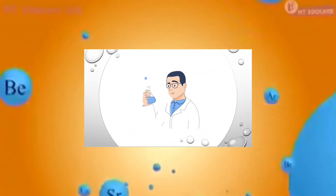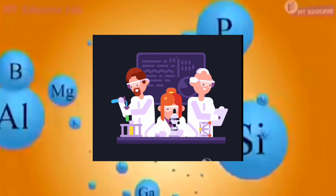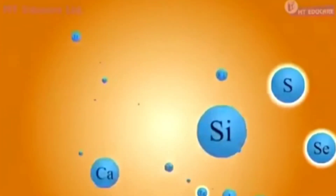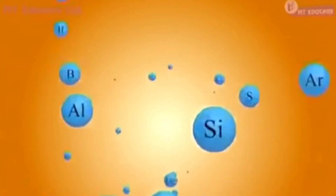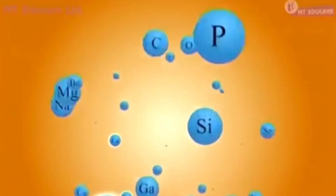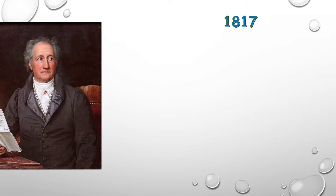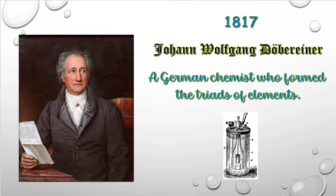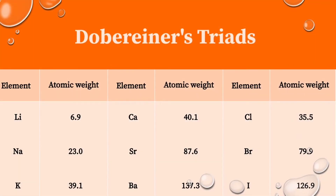Many scientists adopted different ways to classify them. They tried to find out some pattern or regularity in the properties of elements. The first among them was Johann Wolfgang Döbereiner, a German scientist who in 1829 found some groups of three elements which showed similar properties. These groups were called Döbereiner's Triads.